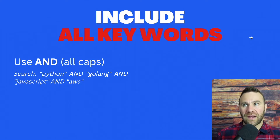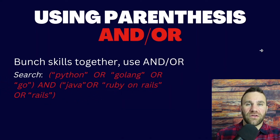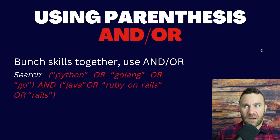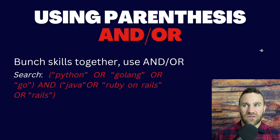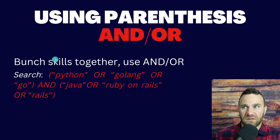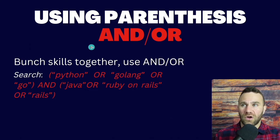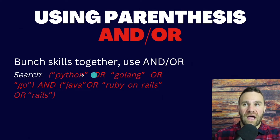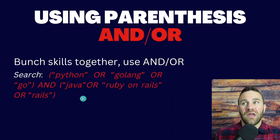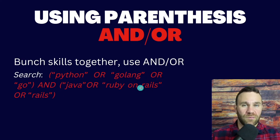So now all the profiles that are populating have all of those phrases listed in their profile somewhere, giving me a very targeted list. Another very useful piece of Boolean search is to use parentheses to bunch things together and really utilize AND and OR. For example, in the first set of parentheses you might have: Python OR Golang OR GO — where GO is a shortened phrase for Golang. This tells the system to find a candidate that has at least one of these listed in their profile. That's what OR is for — it takes one from this set of parentheses, AND one from the next set of parentheses as well.